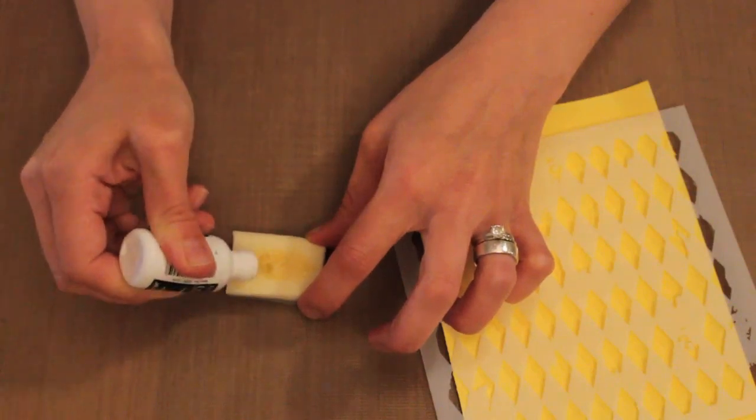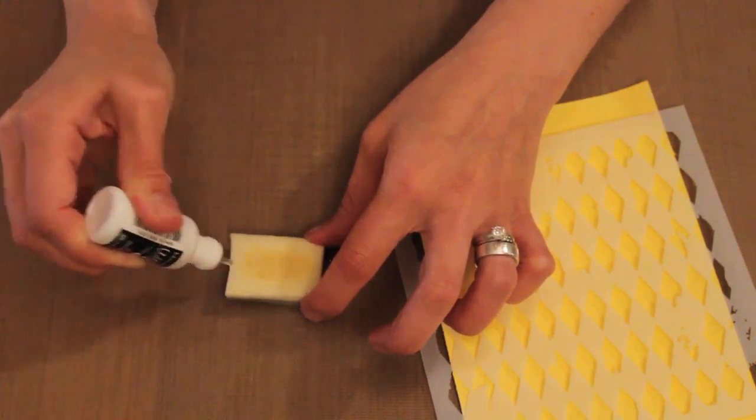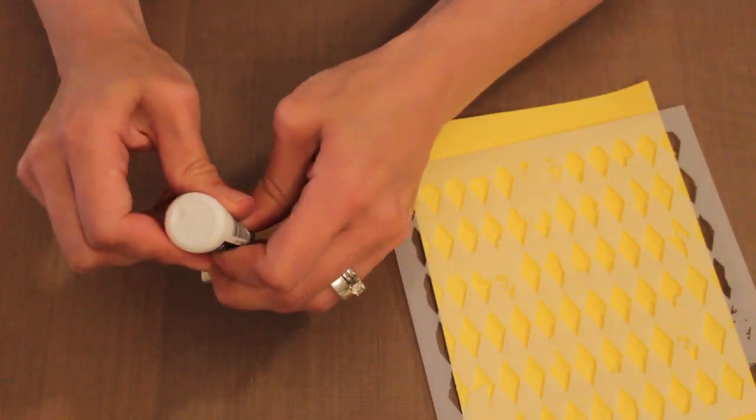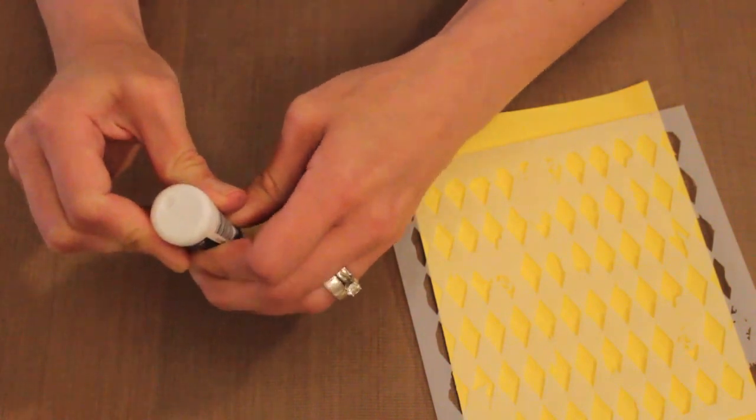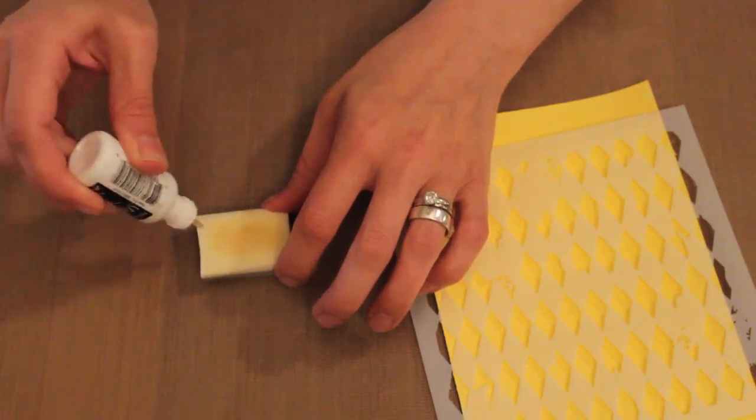You spread it out onto your piece of cut and dry or whatever foam applicator you're using. You could use blending foam as well. You can see that yellowy color on there, that is the reinker.